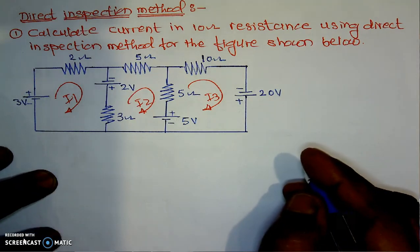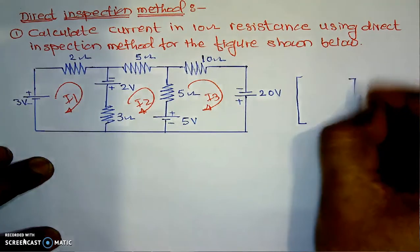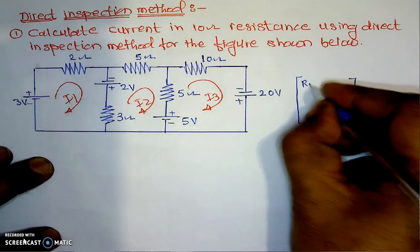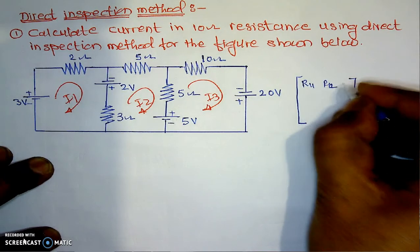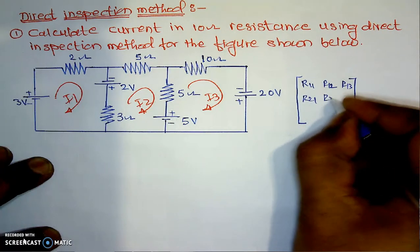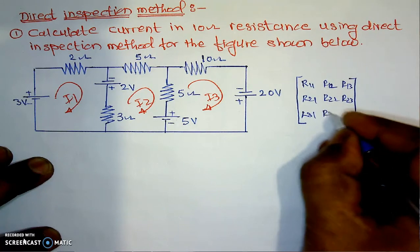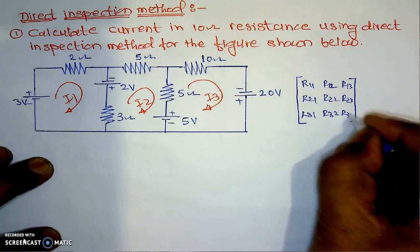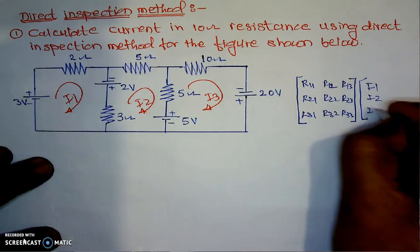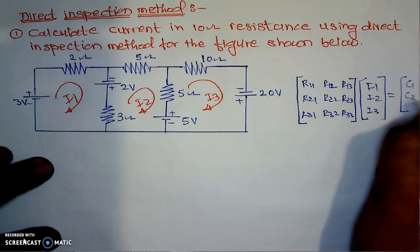I will show how the impedance matrix is generally set up for the circuits. Here this is R11, R12, R13; R21, R22, R23; R31, R32, and finally R33. These correspond to the currents I1, I2, and I3, which are equal to the constants C1, C2, and C3.